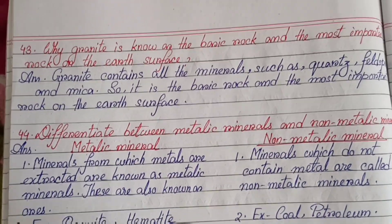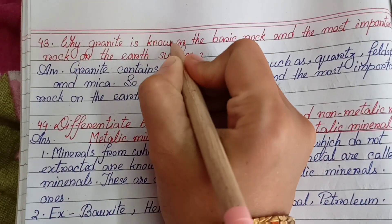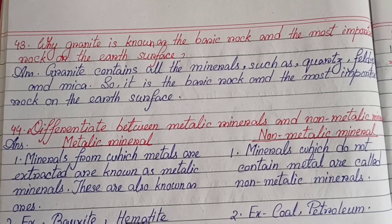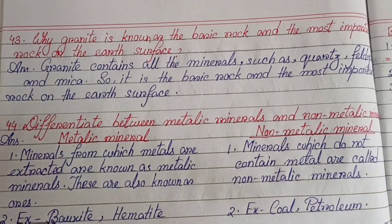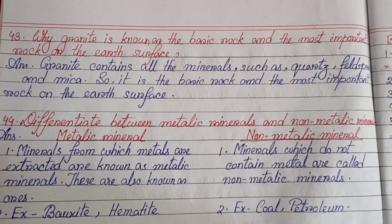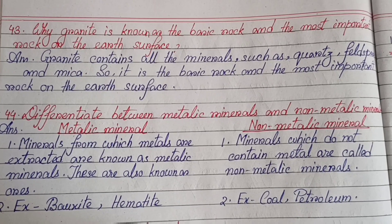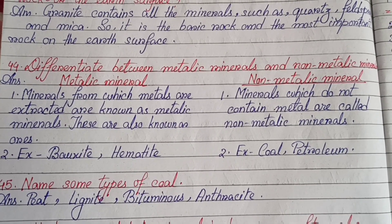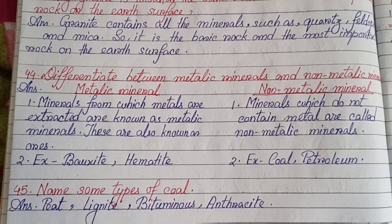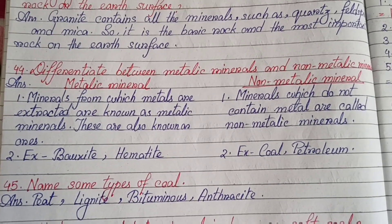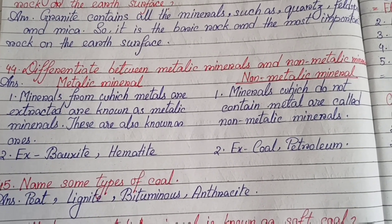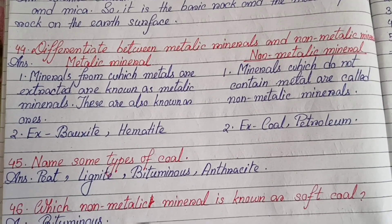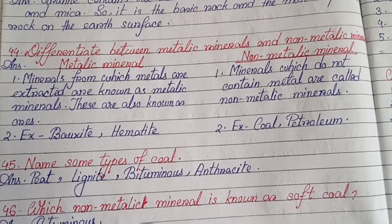Why is granite known as a basic rock and the most important rock on the Earth's surface? Granite contains all the minerals such as quartz, feldspar and mica, so it is the basic rock and the most important rock on the Earth's surface. Differentiate between metallic minerals and non-metallic minerals. Metallic minerals: minerals from which metals are extracted are known as metallic minerals; these are also known as ores. Non-metallic minerals: minerals which do not contain metal are called non-metallic minerals.